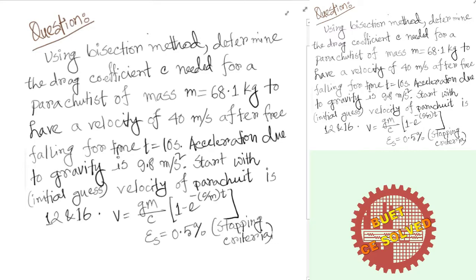Hello everyone. I am going to present a question to you today using the bisection method: determine the drag coefficient C needed for a parachute of mass m equals 68.1 kg to have a velocity of 40 meters per second.